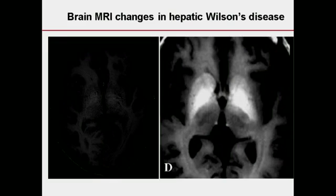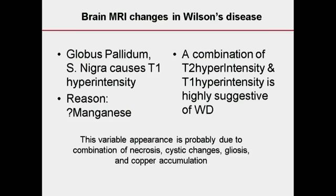Most of you are gastroenterologists and liver specialists. If you do brain MRI in patients with the hepatic form of Wilson's disease, this part of the basal ganglia known as globus pallidus will be white or hyperintense — that is said to be because of manganese. So this is the reason for having T1 hyperintensity.